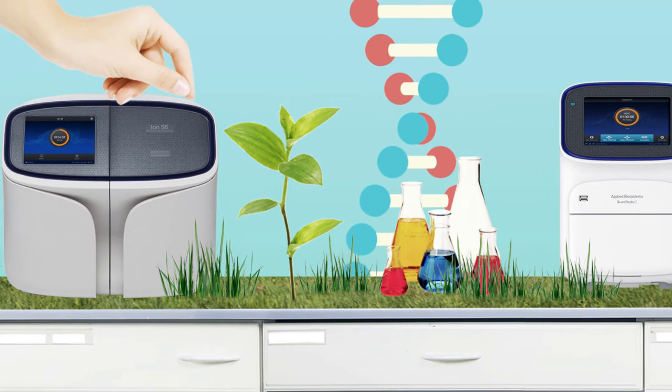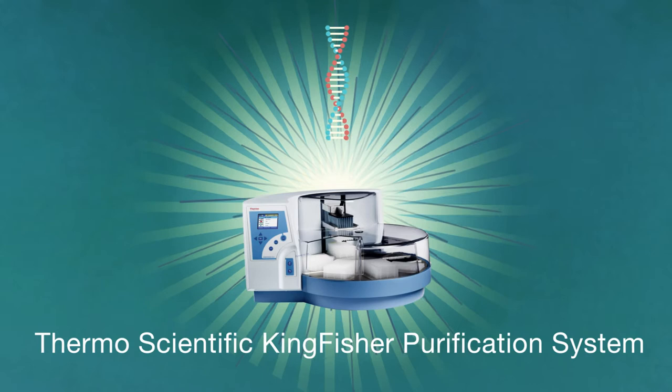Let's take a look at how these tools are used in more detail. DNA is extracted usually from a piece of ear tissue from an animal, or in this instance, a piece of leaf from a plant, using an automated extraction instrument such as our Thermo Scientific Kingfisher Purification System.